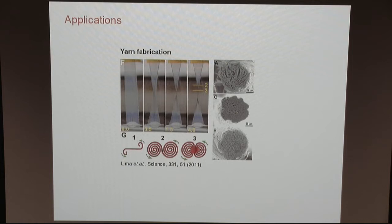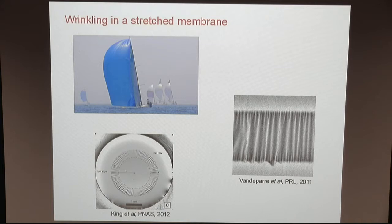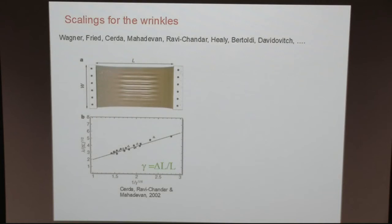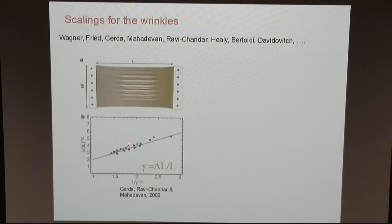Wrinkles appear when a thin sheet is stretched in one direction and not the other. You can see this happens at various scales, even for suspended graphene. There is some understanding of why it happens — lots of people have worked on this problem. There is a very important paper by Cerda, Ravi Chandar, and Mahadevan, which was the first to provide a model and scaling for the wavelength that appears when you take a thin elastic sheet and stretch it. They found that the wavelength decreases as you stretch the thin sheet.